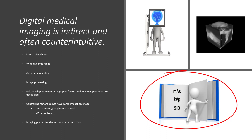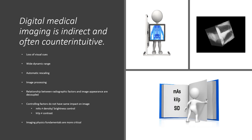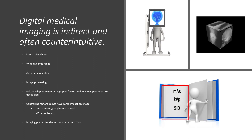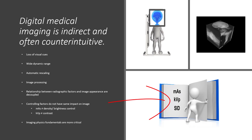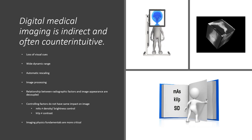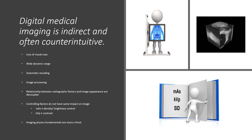The relationship between radiographic factors and image appearance are decoupled in digital imaging. When we used film screen or the photographic process, there was a direct correlation between milliampereage and time, or mAs, to the brightness and density control. There was also a direct relationship of kVp, kilovolts peak, to contrast — the higher the kVp, the less contrast; the lower the kVp, the higher the contrast. This is not true in digital because we have computer algorithms that manipulate the data prior to showing it on our monitor.